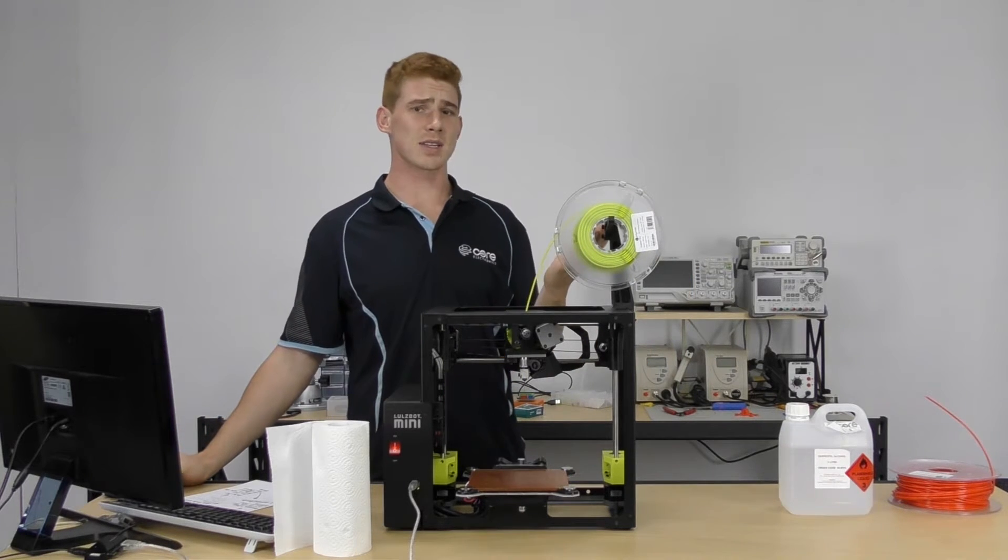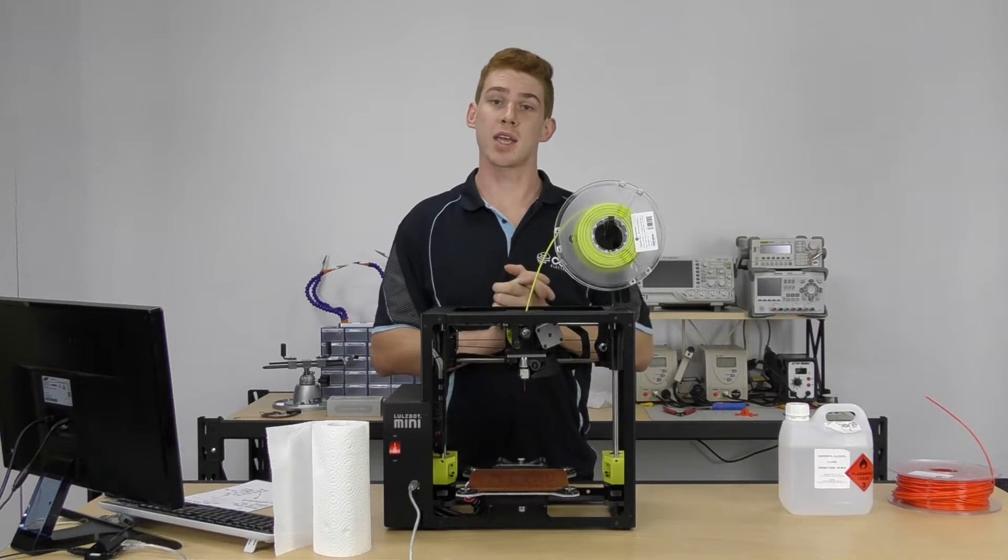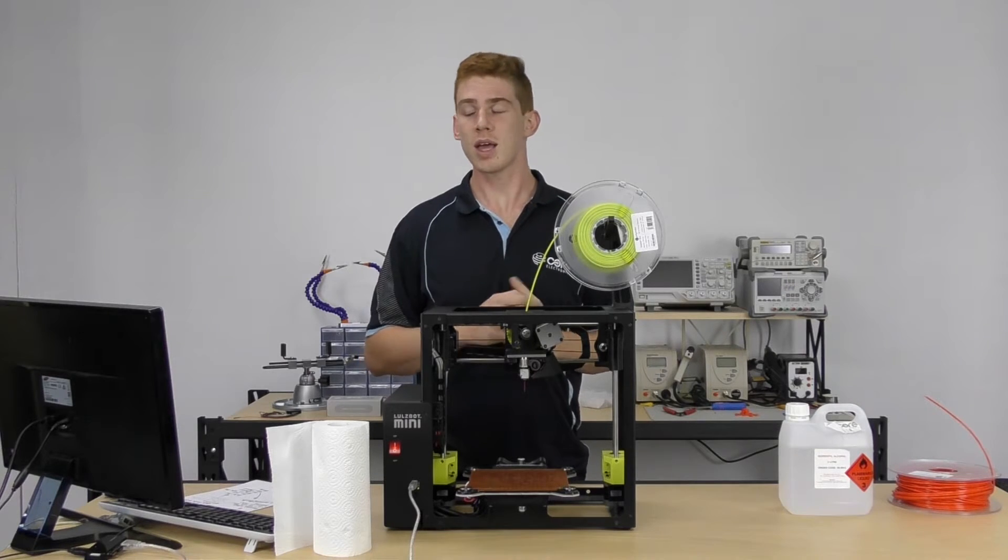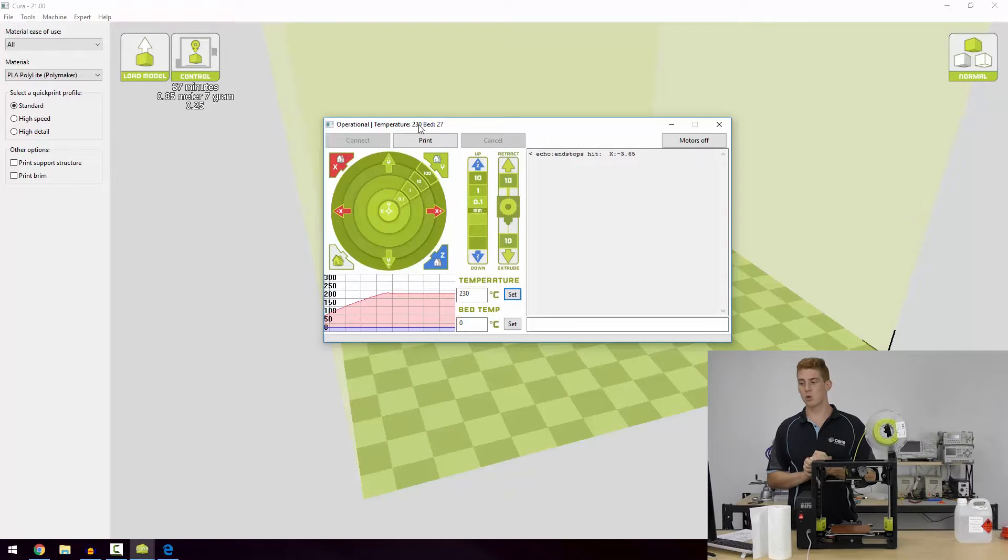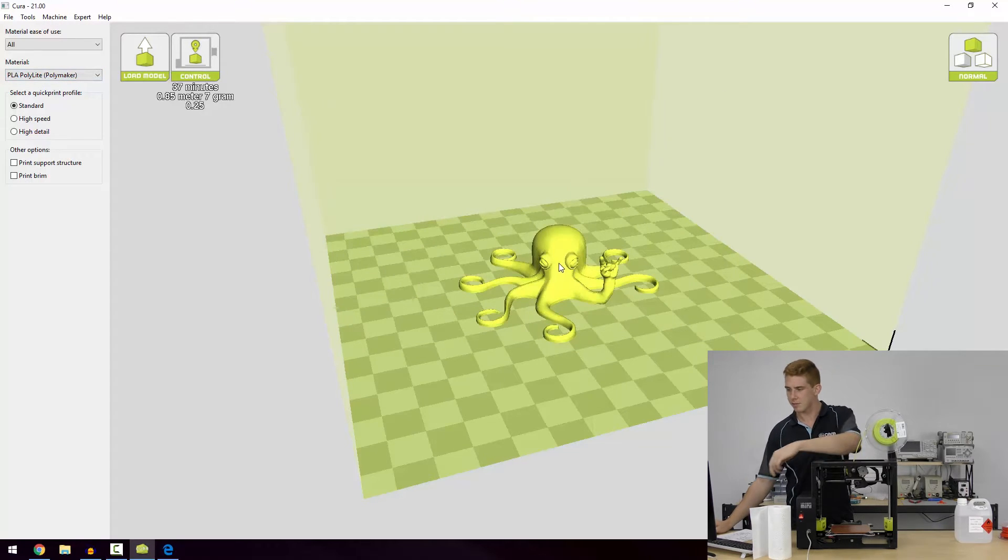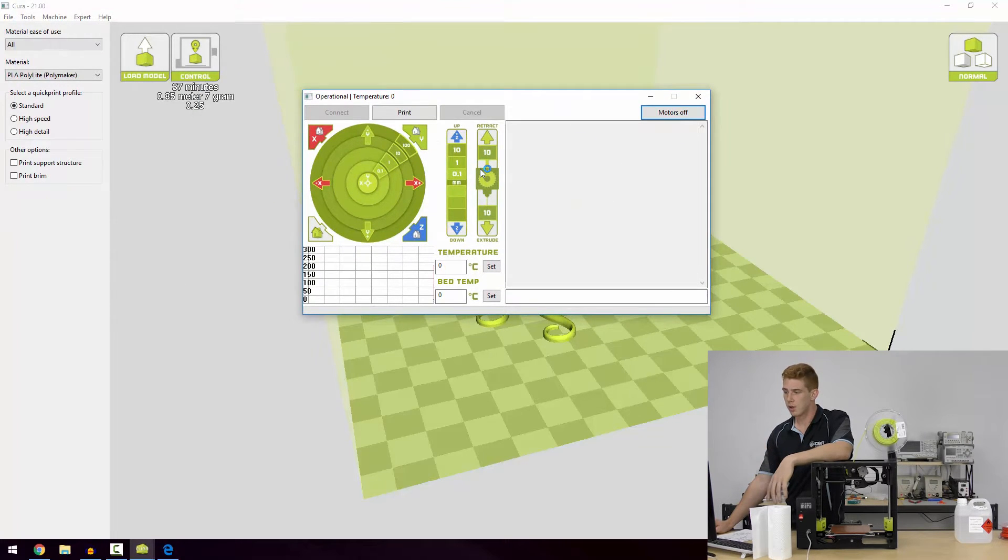So we've got our filament loaded up now. ABS prints at 230 degrees plus; PLA prints at say 190 to 210. So we're going to have to drop our temperature down to print with that, but we don't have to do that manually. Like I said before, we selected the PLA from Polymaker already as our print profile, which is over here. Essentially what we've done is prepared that with all those settings, and all the G-code is ready within this program. When I click control, the settings that are on that print bed are essentially imported into my printer control window.